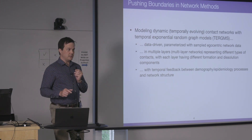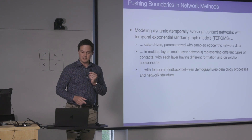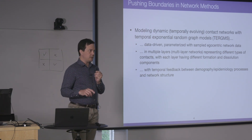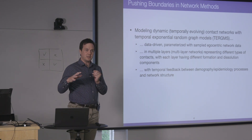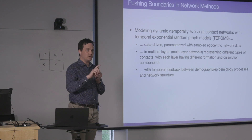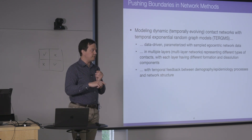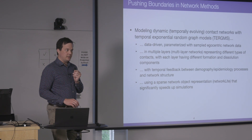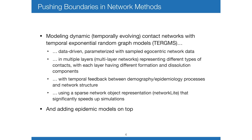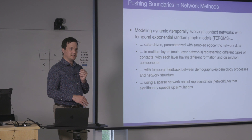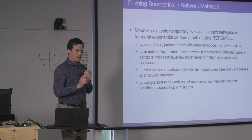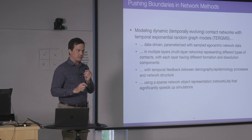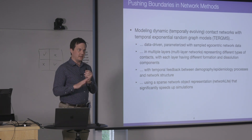One key thing we're doing is handling temporal feedback between the demography and epidemiology — everything going on in the population that's not the network — back onto the network. They're always talking back and forth between the network structure and everything else going on in the simulation. We've also developed a network representation framework called NetworkLight that removes unnecessary features for faster simulation, representing core features of undirected binary networks with no missing data, and it speeds things up significantly.